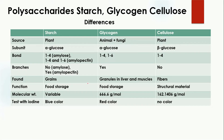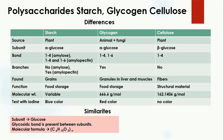To test these compounds, you can use iodine. Iodine will turn blue when it reacts with starch, and will produce a red color when it reacts with glycogen. In the case of cellulose, no color change takes place.